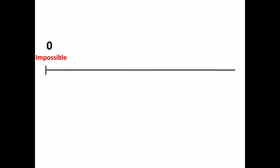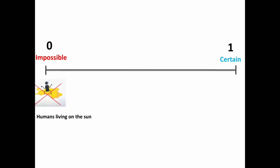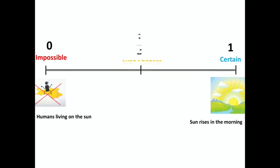Let us observe the probability line. If the event never happens, the probability is 0, which we call an impossible event. For example, humans living on the sun is not possible, so we say it is an impossible event. If the event definitely happens, probability is 1, which we call a certain event. For example, the sun rising in the morning happens definitely, so we say it is a certain event. There is another event where the chances of occurrence are 50-50, which we call even chances.